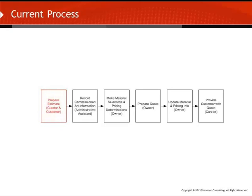If the customer shows an interest in commissioning an art sculpture, the curator discusses the type of art sculptures created by the gallery and the special attributes of available materials. In order to give the customer a cost estimate on a custom piece, the curator assists the customer in specifying the desired materials on a commissioned art form. The curator, referring to internal documentation of materials the gallery has chosen to feature along with current pricing, provides the customer with a written estimate and adds this estimate information to the commissioned art form. Because the availability and pricing of materials is fluid, the customer is promised a call with a firm quote within a few days.